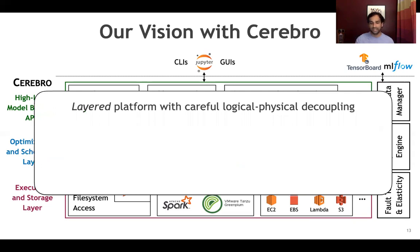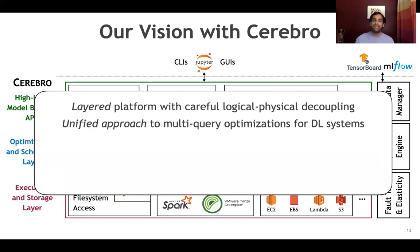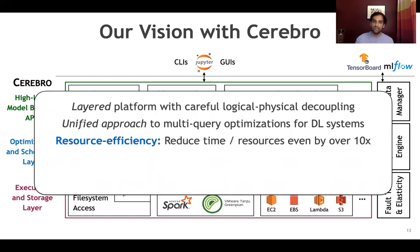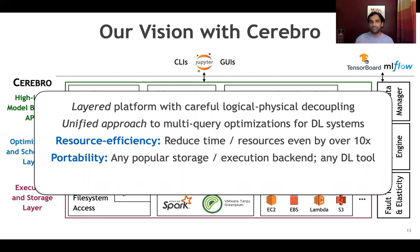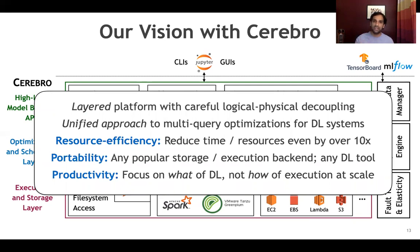Check out the paper for more details about the system architecture. To summarize, it's a layered platform that brings careful logical-physical decoupling — what we are used to in the data systems world — into the deep learning systems landscape. It enables a unified approach to devising novel multi-query optimization techniques for deep learning systems, and this leads to resource efficiency. We've shown that we could reduce runtime and resource usage like memory, storage, and network by even over 10x. Sometimes network costs even go down by 10,000x. These techniques are applicable to virtually any storage and execution backend and any deep learning tool like TensorFlow and PyTorch. And this all in turn leads to productivity — improved productivity for data scientists and deep learning application users, who can focus on the what of the methods rather than the how of executing them on large-scale data with large models on different kinds of resources.